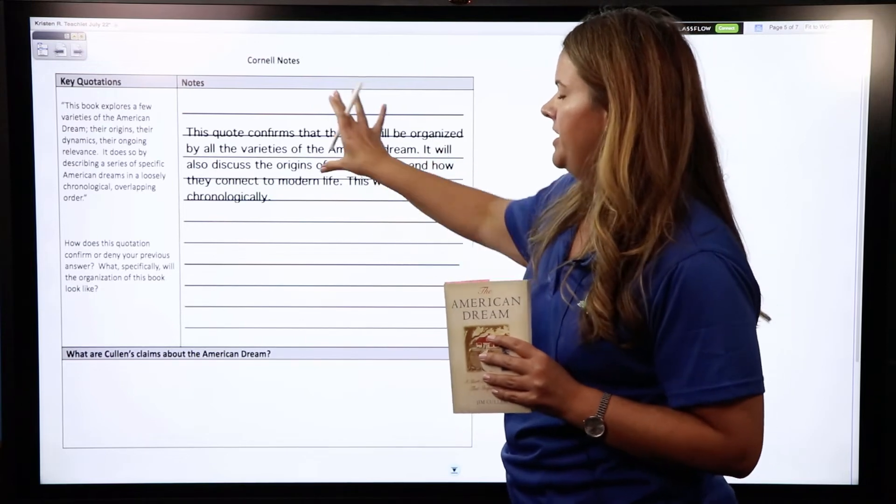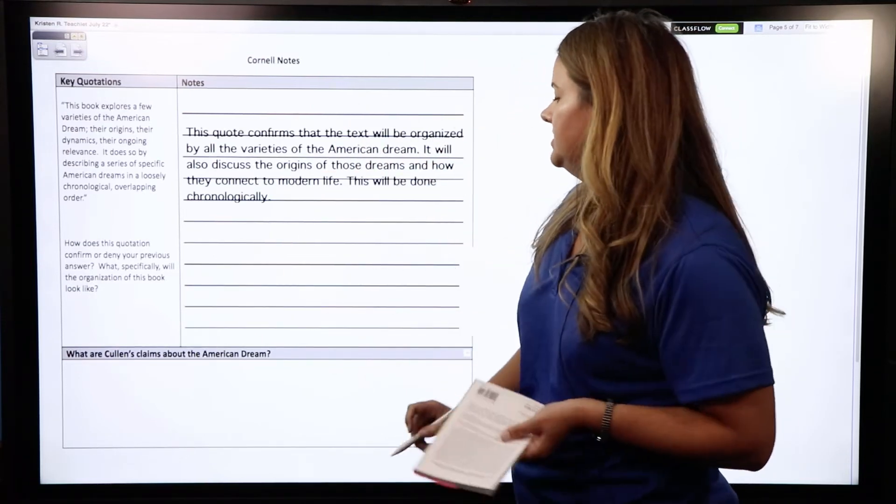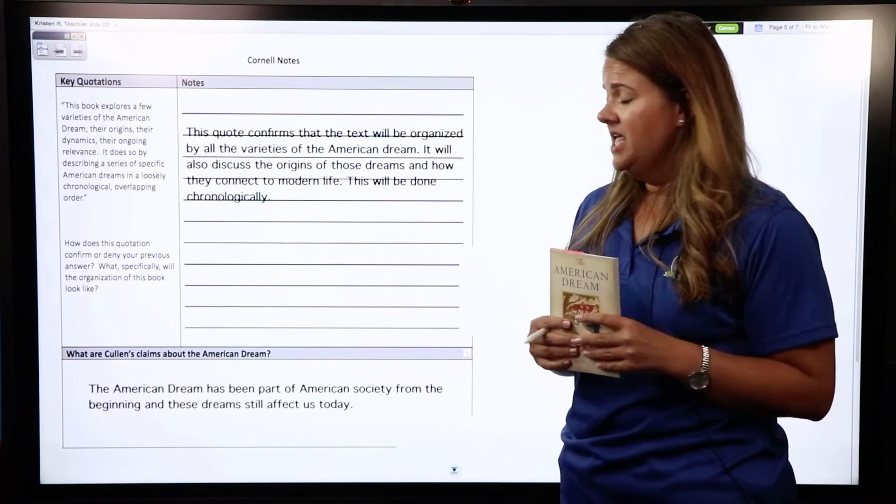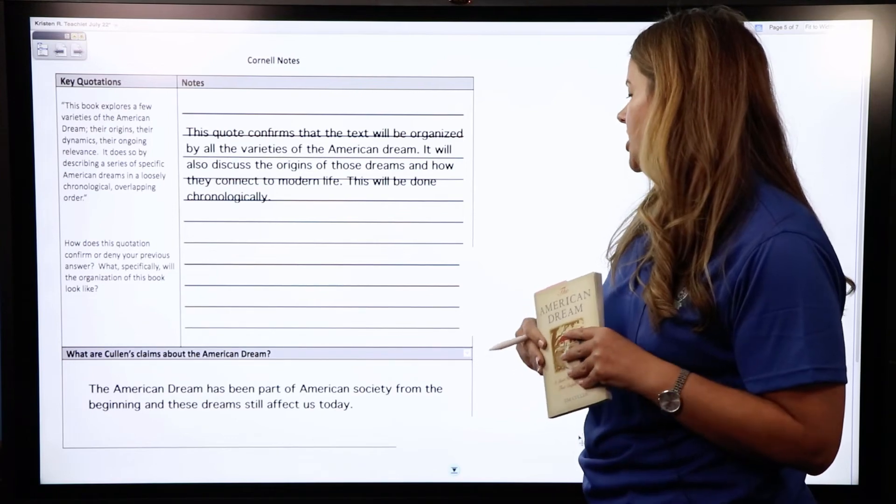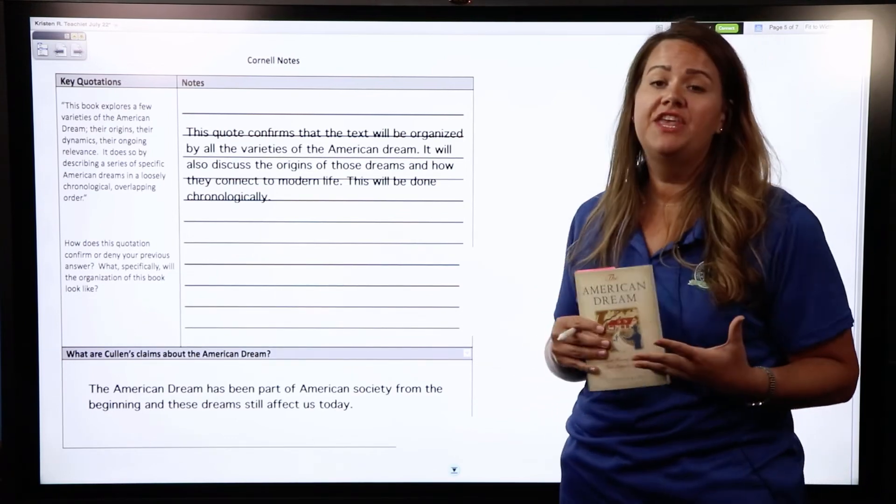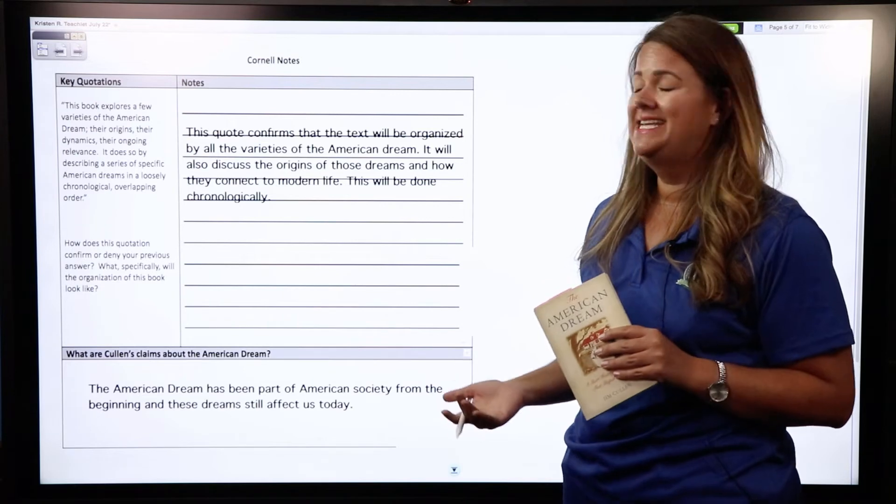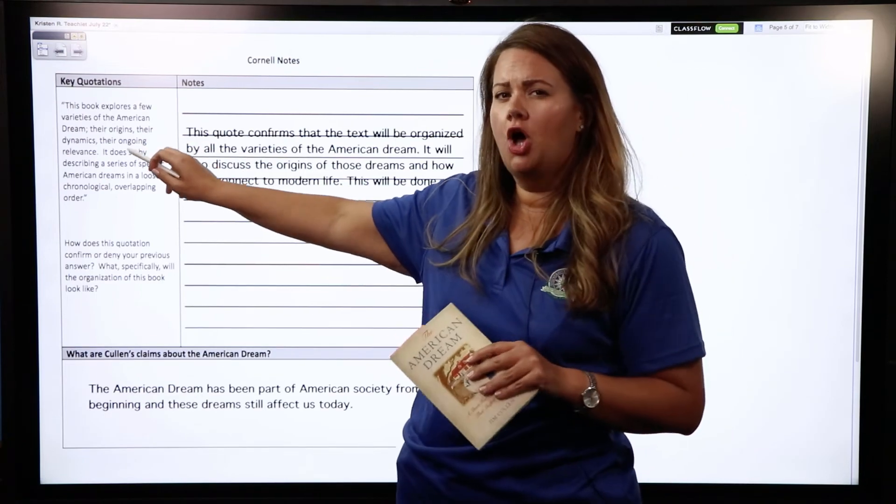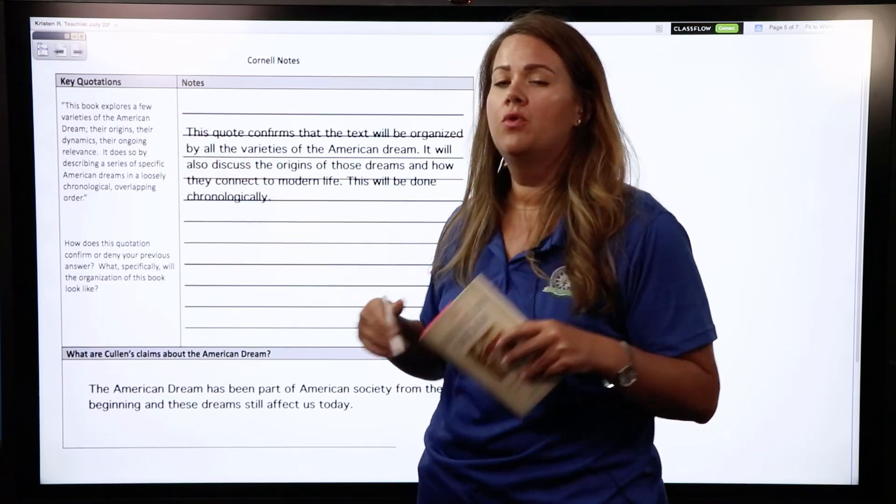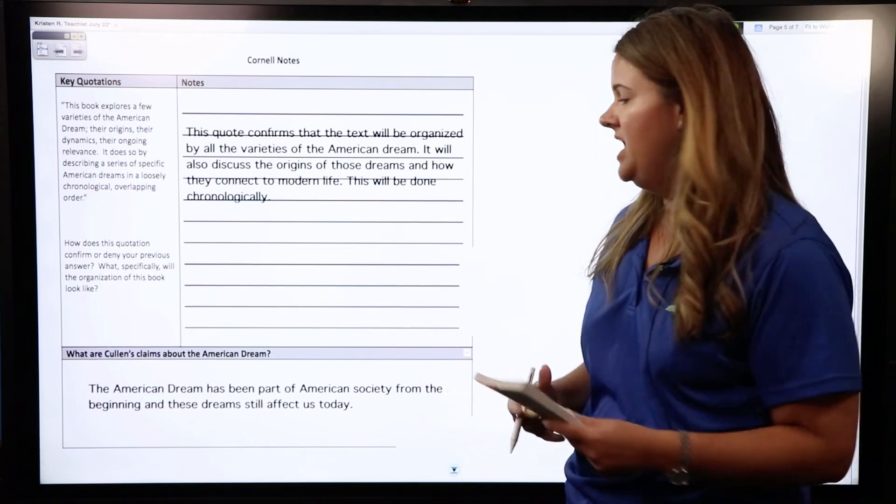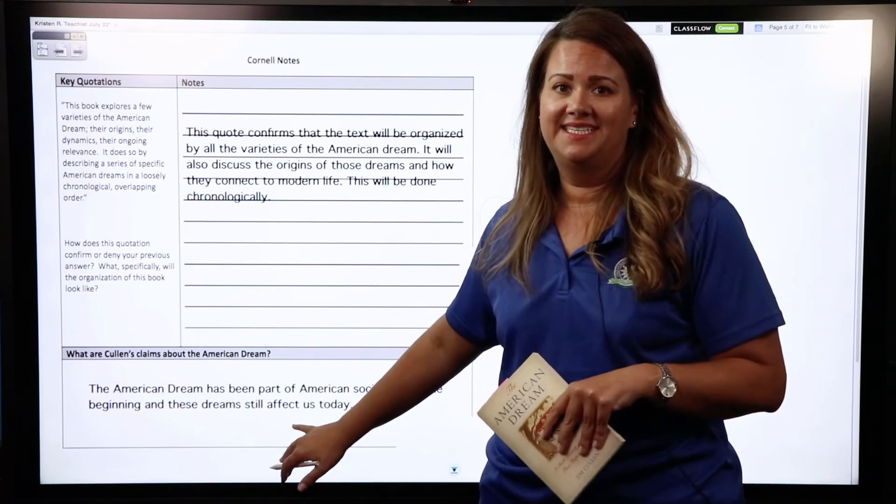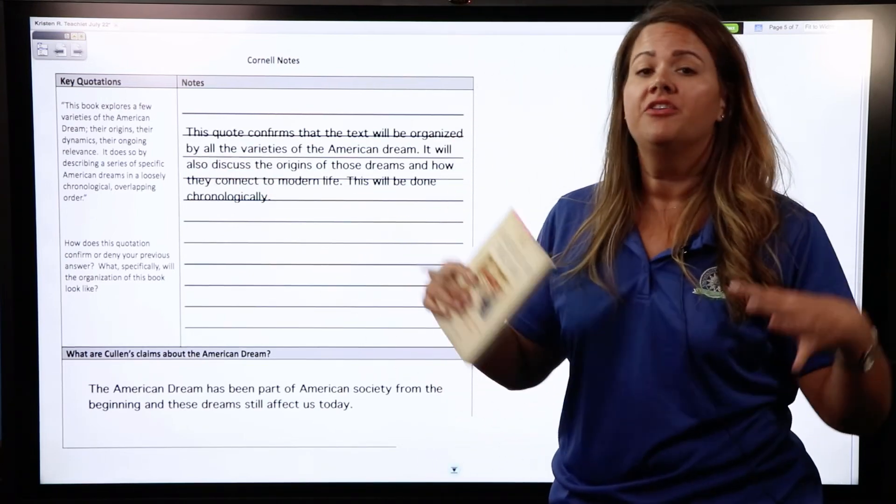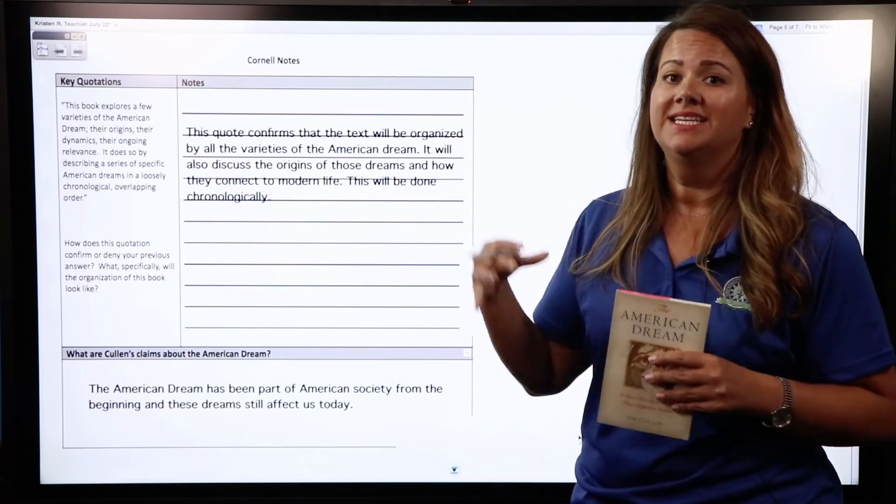So that's going to be the first part here that I've written. Now down here what are Cullen's claims about the American dream? So I put that the American dream has been part of American society from the beginning and these dreams still affect us today. So we know that it's been with us in our society from the beginning, and up here he's going to talk about those origins, and the origins of course are the beginning of things, but it still affects us today because he's talking about the relevance that the American dream still has for us alive and well in America today.